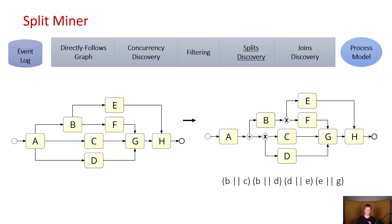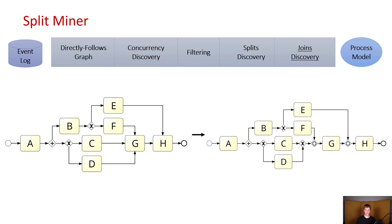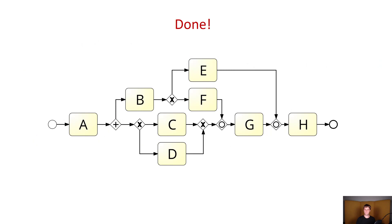Once we have those split gateways placed, the model is still not valid, so we have to also discover the join gateways. The easiest way to do it is to use OR gateways in order to make the model valid, and here we just have to find the correct places where to put the OR gateways.